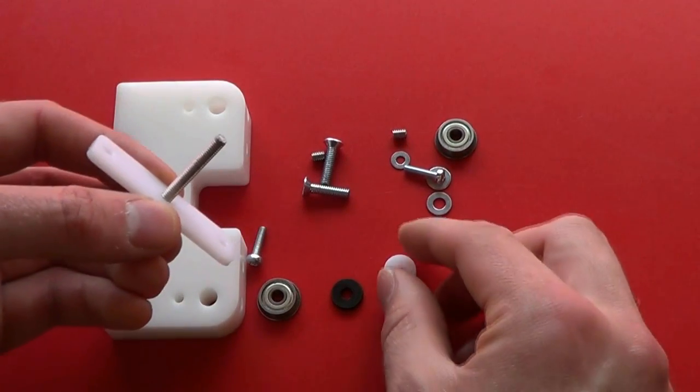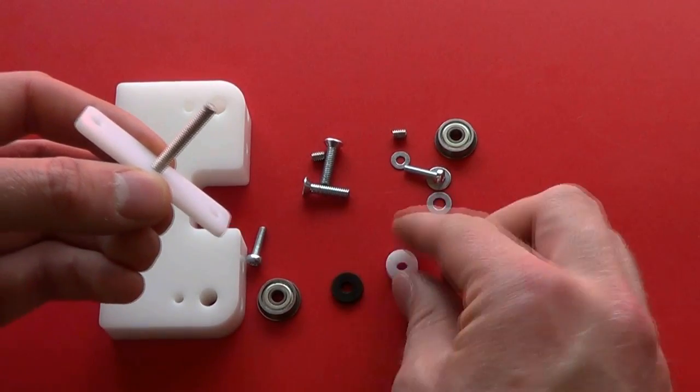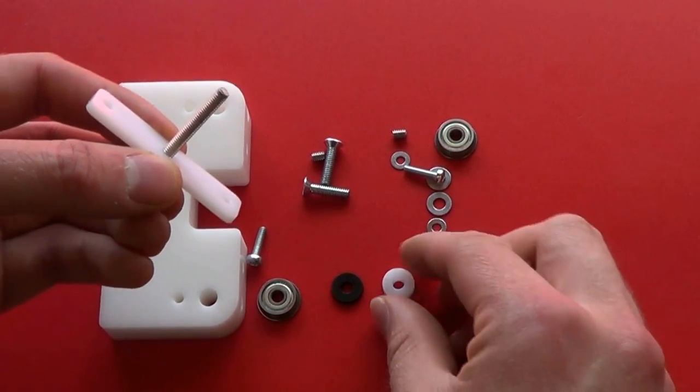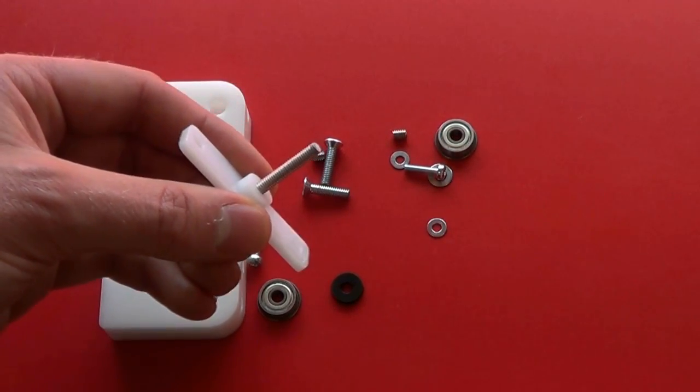Then put on the thicker of the two plastic spacers. There's one that's 2mm thick and there's one that's 4mm thick. Put on the 4mm thick one first, then another steel washer.